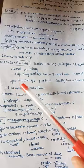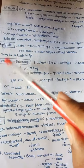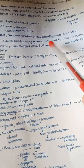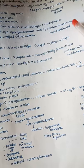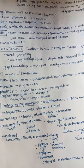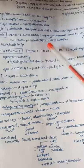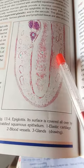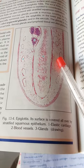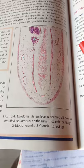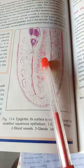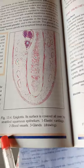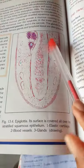Next let us see the epiglottis. The epiglottis has taste buds present in the epithelium. Centrally it has elastic cartilage upon which the mucous membrane is present. It is lined by non-keratinized stratified squamous epithelium, and the posterior lower part is covered by pseudo-stratified ciliated columnar epithelium. In the diagram, the surface is covered by stratified squamous epithelium; number one is the elastic cartilage, number two shows blood vessels, and number three shows glands.